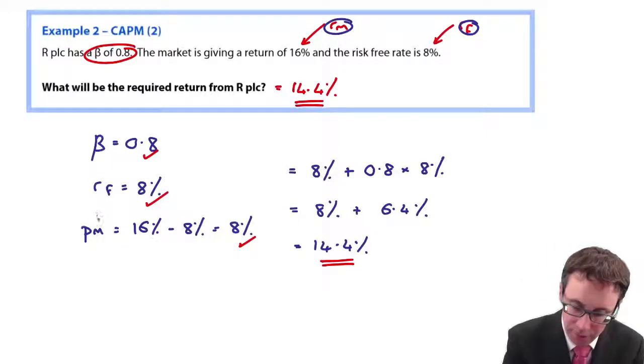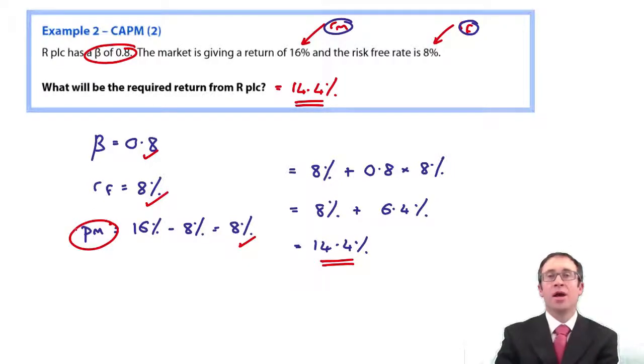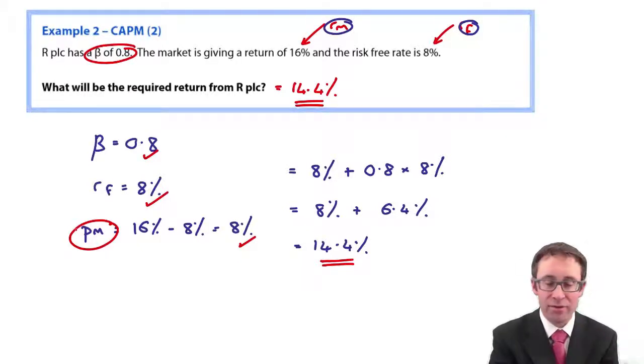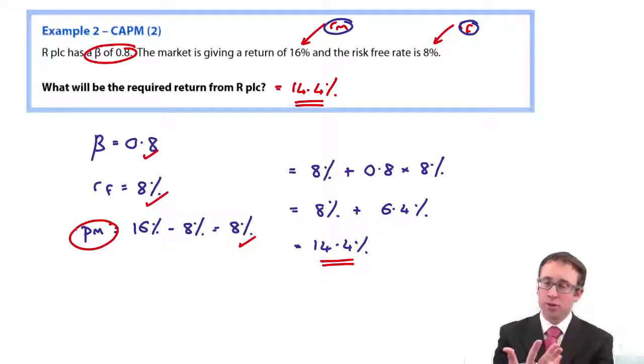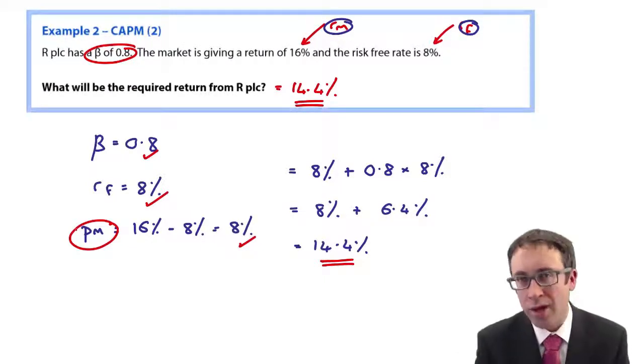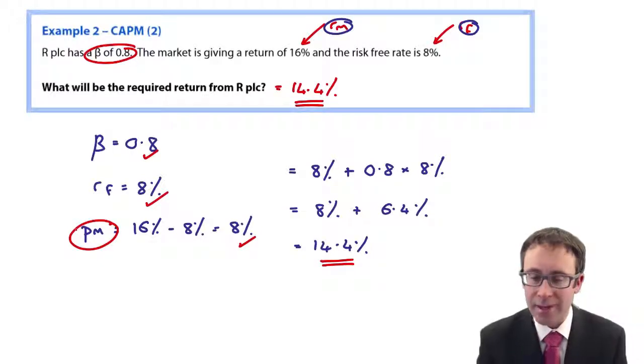You could, in an exam question, be given the risk premium as opposed to RM. If you read the premium there as RM, you might do RM minus RF, being then what you think is the premium. 8 minus 8 is 0. That's just nonsense. Does that make sense? If it doesn't, do the questions and you'll soon see it.